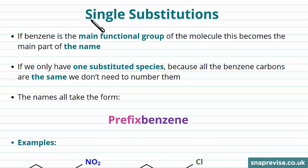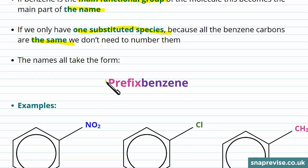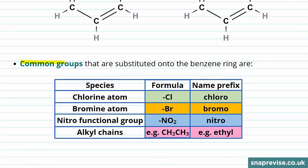So firstly, let's look at naming the derivatives that come out of single substitutions. If benzene is the main functional group of the molecule, this becomes the main part of the name. If we have only one substituted species, then because all of the benzene carbons are identical, we don't need to number them — because of the symmetry of the molecule, we could just rotate it. The names of these types of molecule take the form of prefix-benzene. These prefixes were given in the table before. So if it was a chlorine atom we'd have chlorobenzene, bromine gives bromobenzene, a nitro functional group gives nitrobenzene. If we had some sort of alkyl chain, it could be methylbenzene or ethylbenzene.